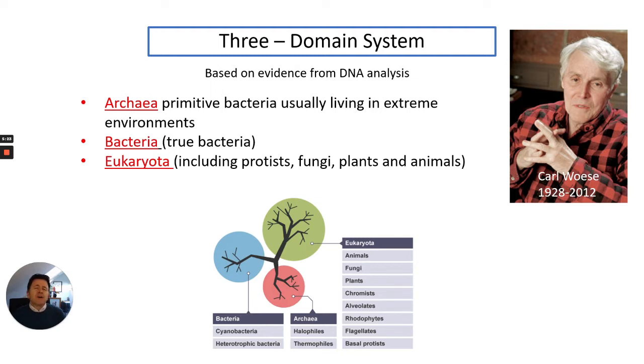He looked further than kingdom, higher than kingdom, and he looked at the domains. The three domains are Archaea, which are primitive bacteria which usually live in extreme environments, so you might remember talking about extremophiles, for example on volcanic vents under the sea; bacteria, the true bacteria, and there are many species of bacteria; and then the Eukaryota, which includes protists, fungi, plants, and animals, and that includes us as Homo sapiens as well.